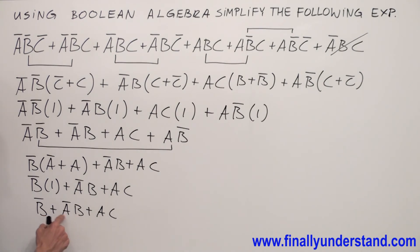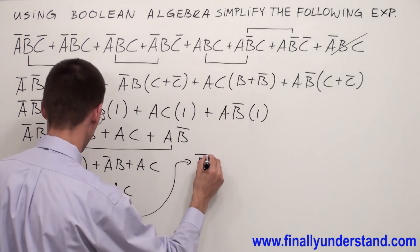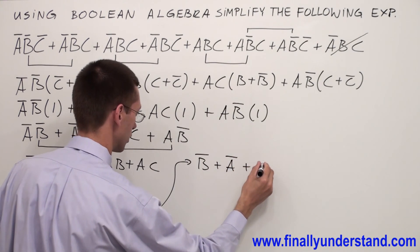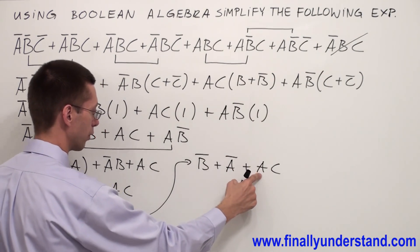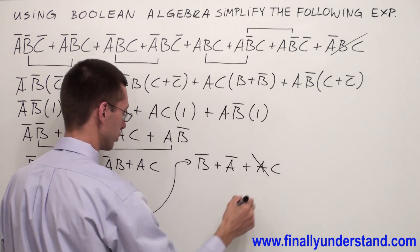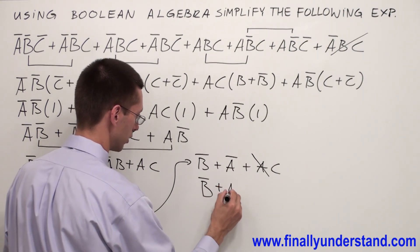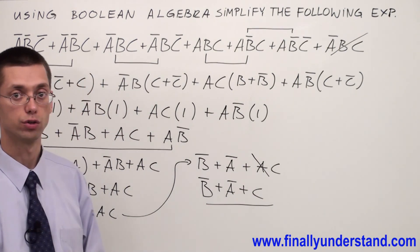Now I have the complement absorption theorem over here. Anytime I have complements but one of them is combined with something else, that complement term is supposed to be dropped out. So I'm going to cancel out A'B, and then I have complements where one is combined with C, so that one drops out too. And I'm going to end up with B' or A' or AC. And this is the solution to our problem.